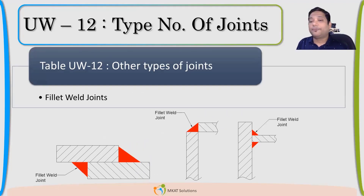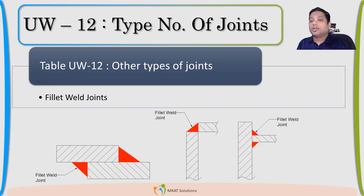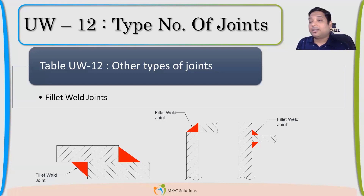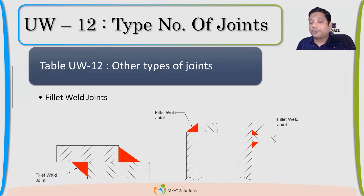There are other types of welds as well — Types 4, 5, 6, 7, and 8, making 8 types in total. Those are mainly lap joint or corner joint types. All those welds will not have any advantage in terms of radiography. It does not matter if radiography is done or not — these kinds of welds will not have any benefit.